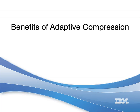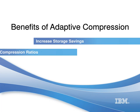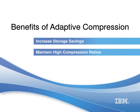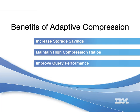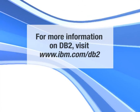You have seen the benefits of adaptive compression over classic row compression. You can save further on storage space when compared to classic row compression, and adaptive compression provides a high compression ratio. With a smaller storage footprint and data concentrated on fewer data pages, adaptive compression could improve query performance. For these reasons, DB2 compression can help you save money through decreased storage requirements, increased system availability, and improved query performance. For more information on DB2, visit www.ibm.com/db2.